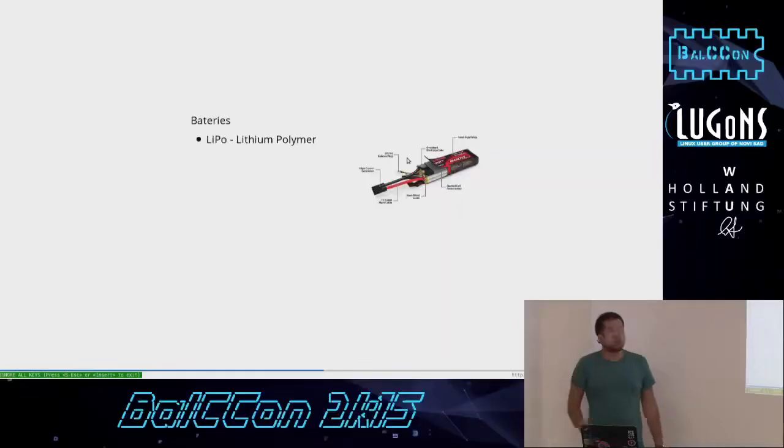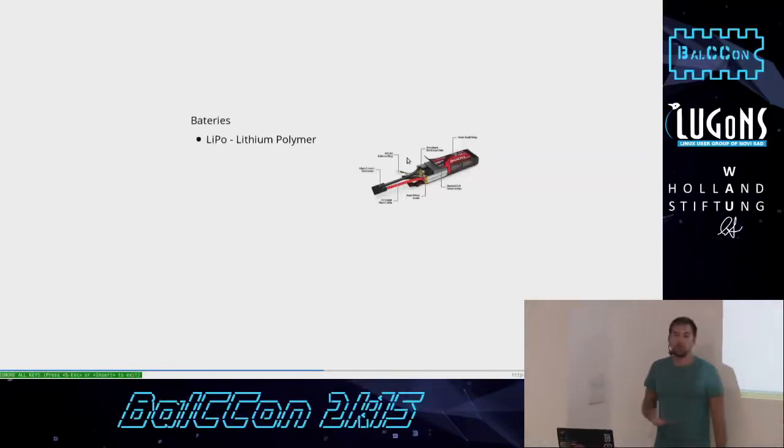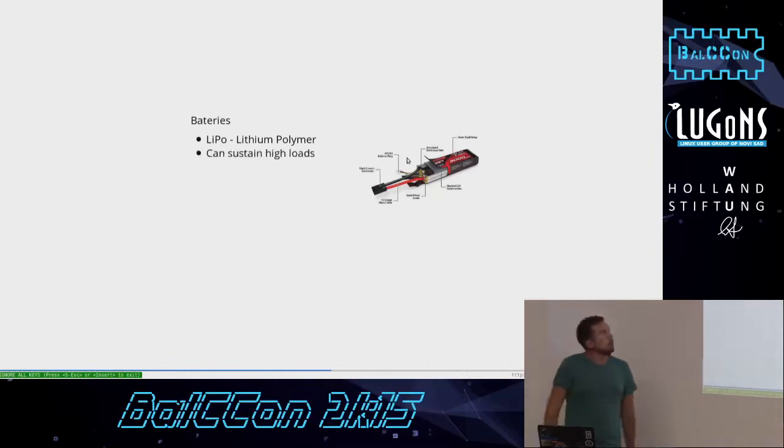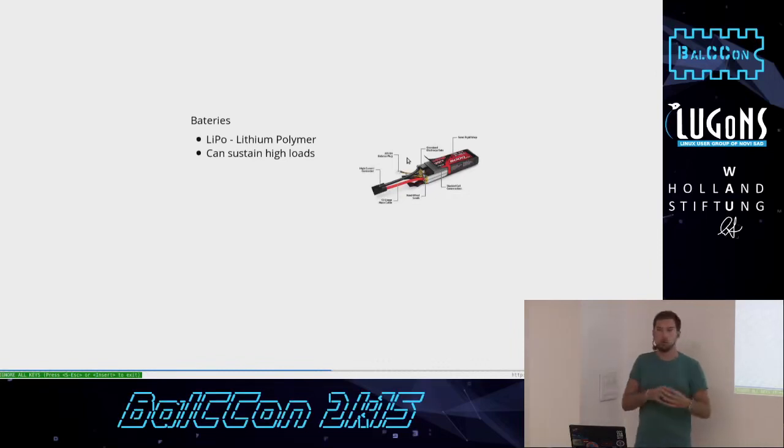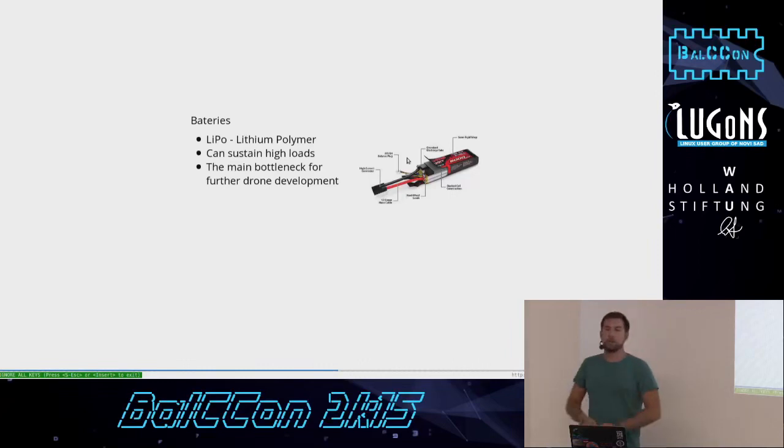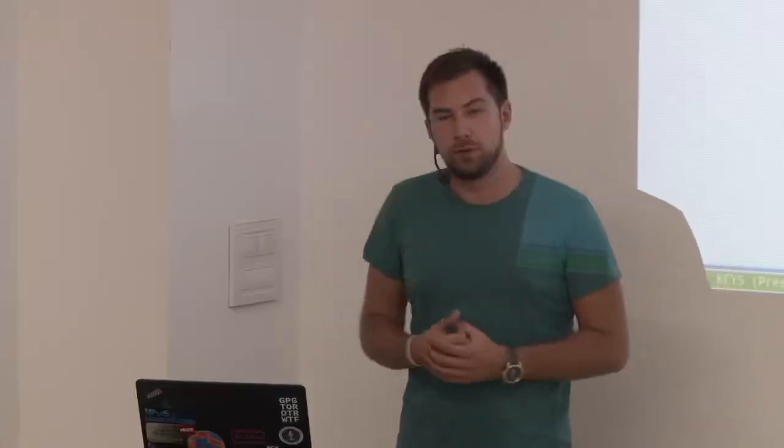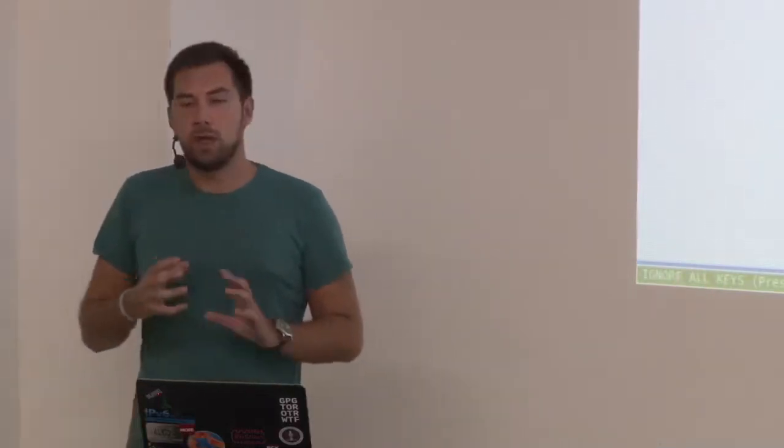Batteries. Most drones that you can build use lithium polymer batteries. They're very reliable, they're also cheap. You can buy them anywhere. They can sustain very high loads. That's very important because traditional batteries cannot sustain those big loads when you put on them. Batteries are the bottleneck for further drone development because the only thing that's really limiting drones nowadays, multirotors, are flight times. The flight times are not more than 20 or 30 minutes usually, and that's a big problem.